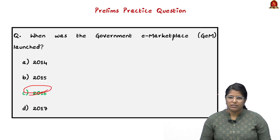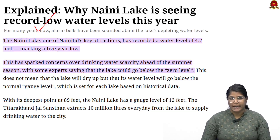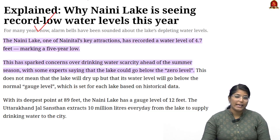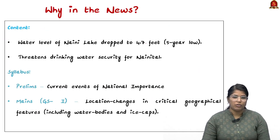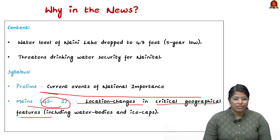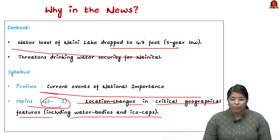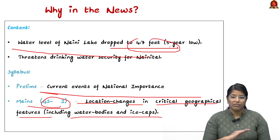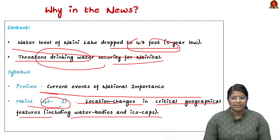This article talks about Naini Lake and explains why it is seeing record low water levels this year. From the prelims perspective, it can be asked under current affairs of national importance. In mains, it falls under GS Paper 1 — location changes in critical geographical features including water bodies and ice caps. The news is that the water level of Naini Lake has dropped to 4.7 feet, which is a 5-year low. This threatens drinking water security for people of Nainital.